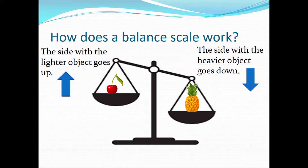How does a balance scale work? The side with the lighter object goes up, and the side with the heavier object goes down. In the first scale, on the side that goes up we have a cherry — is one cherry light or heavy? On the next side we have a pineapple. Between a cherry and a pineapple, which one is lighter? The cherry! That's why that side goes up. The pineapple is heavier than the cherry, that's why it goes down.